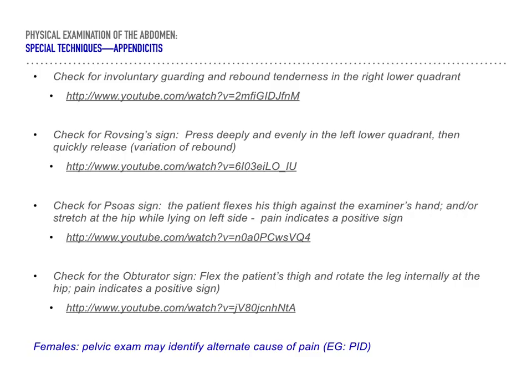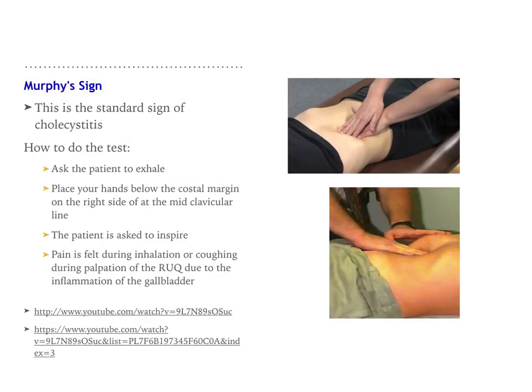There are more technique videos to follow up on, such as rebound tenderness when looking at appendicitis. You can also look at Rovsing's sign, Psoas sign, and the obturator sign. Murphy's sign is a test for cholecystitis, and the techniques on how to do that are accompanied with videos. I will post all the videos in the module for you to watch.